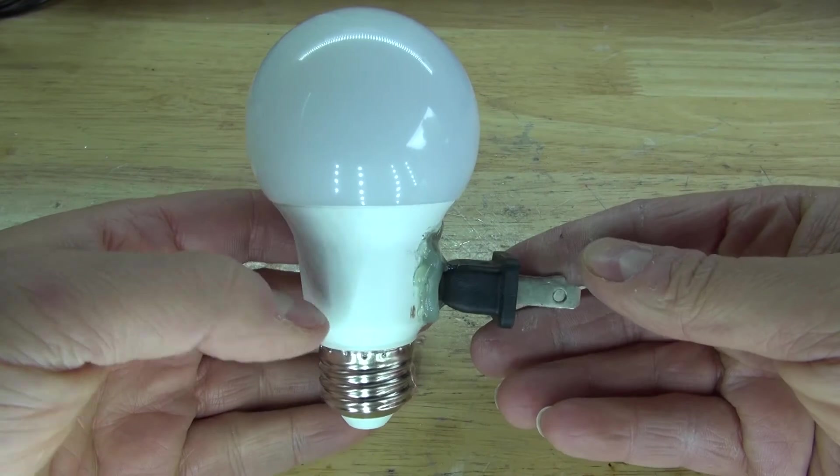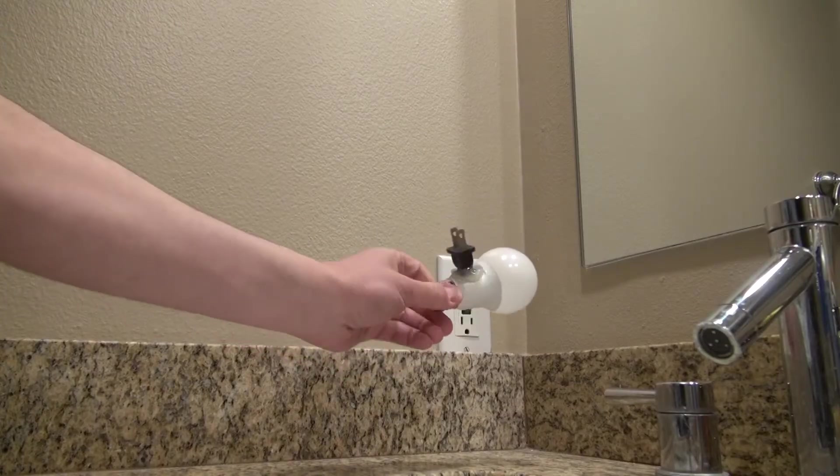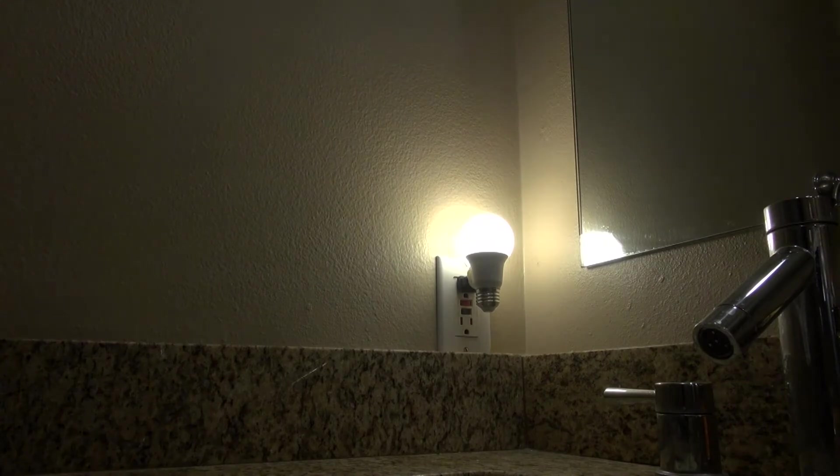Now let's go ahead and test it out in a very dark room. And now let's go ahead and plug in the night light bulb. Plug it in. And there, as you can see, it works. Turn off the lights. And there, it gives a very nice glow.